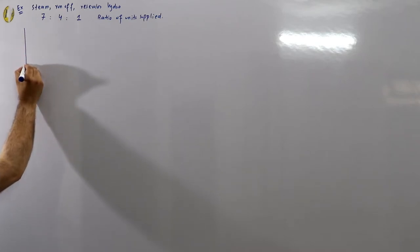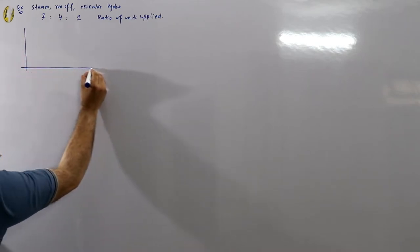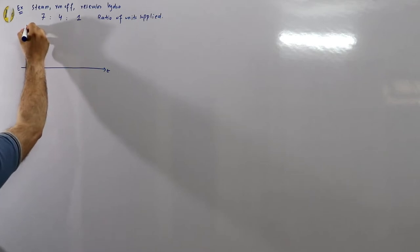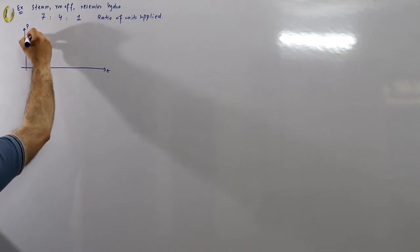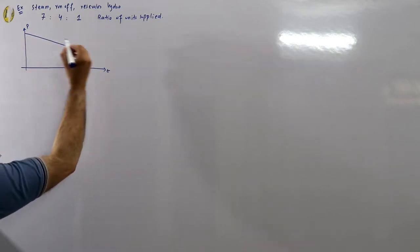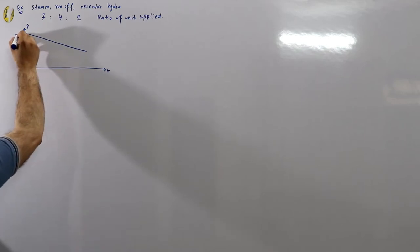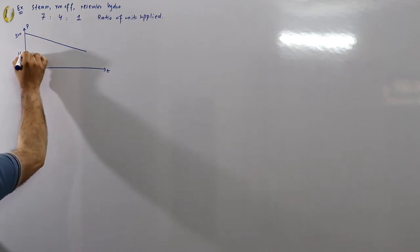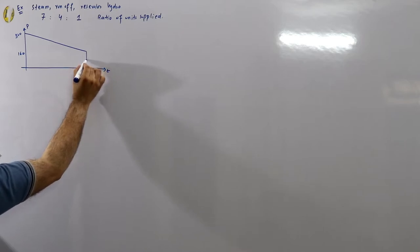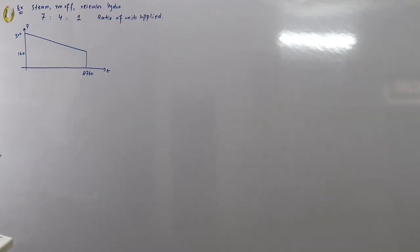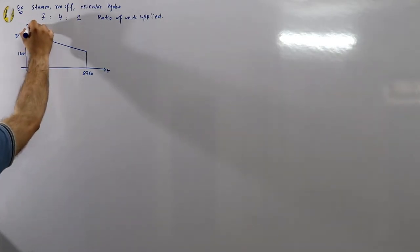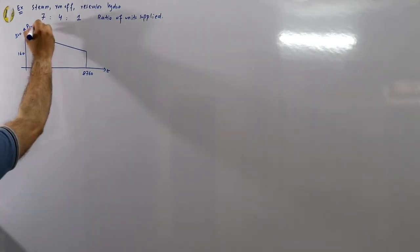Let me show you the load duration curve. If this is my time axis and this is my power axis in megawatts — this is a yearly load curve — from 320 to 160 megawatts, where 320 is the maximum demand and 160 is the minimum demand. The horizontal axis goes to 8760 hours, which is the yearly period.